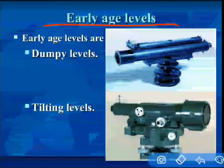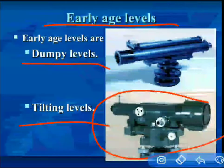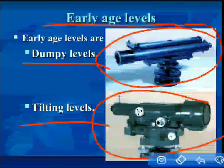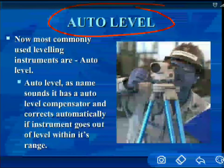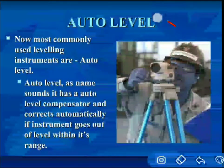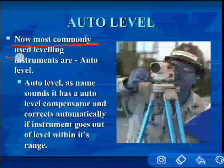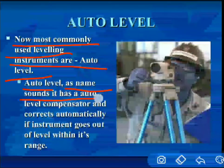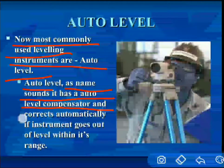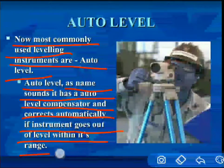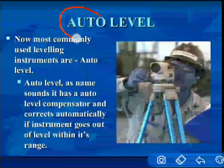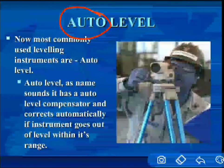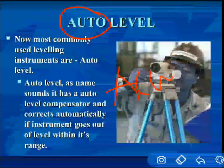In the early age of leveling, we were using dumpy levels and tilting levels. Nowadays we use only auto level, which is the advanced one. The most commonly used leveling instrument is the auto level. As the name suggests, it has an automatic compensator that corrects automatically if the instrument goes out of level within its range.